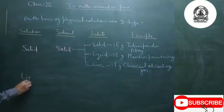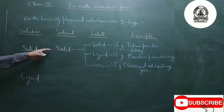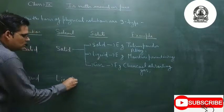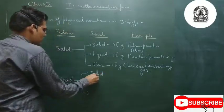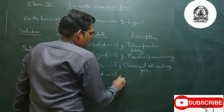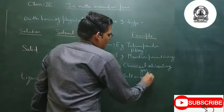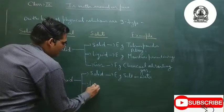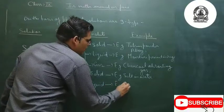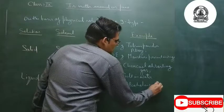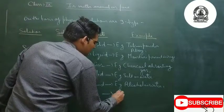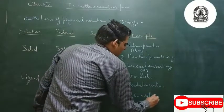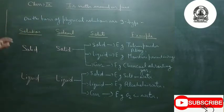Next is the liquid type of solution, where the solvent is liquid. The solute can be of different types. First is solid-in-liquid type of solution — examples are salt in water or sugar in water. Second is liquid-in-liquid type — example is alcohol in water. Third is gas-in-liquid type — example is O₂ in water.